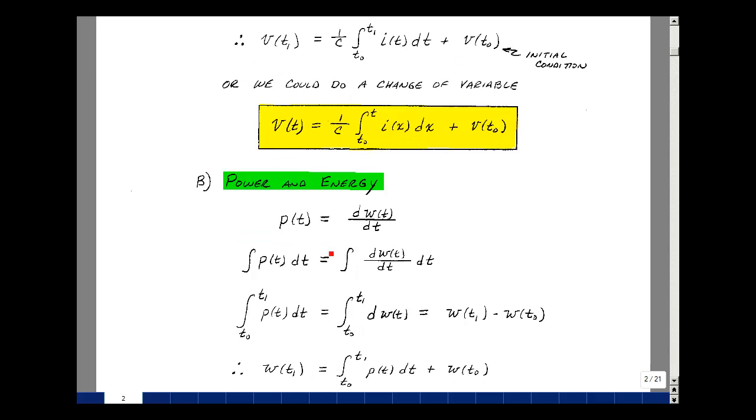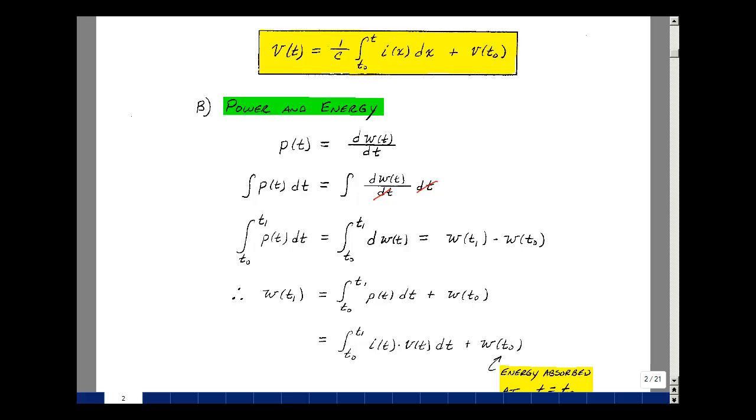We said earlier in the course that power is equal to the derivative of energy with respect to time. So let's integrate both sides dt. This will again cancel. Let's integrate from T0 to T1. And so I've got the integral again of 1. And so I'm going to evaluate at the upper limit of energy minus the lower limit. And then I can solve for the energy absorbed sometime T1 in the future, as the integral from T0 to T1 of the power plus W at T0.